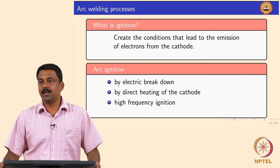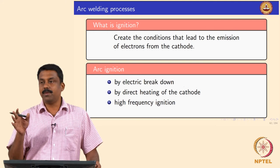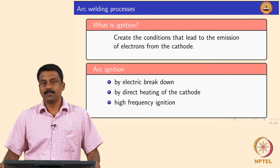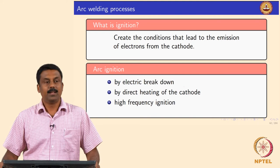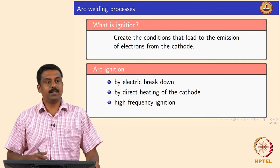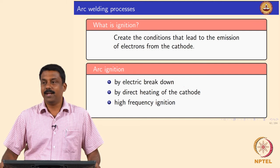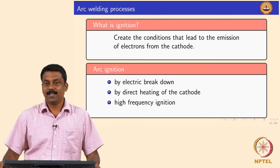This can be done by three ways. In all cases, ignition means we need to trigger electron emission from the cathode — either by electric breakdown, direct heating of the cathode for thermionic emission, or by high frequency ignition. For example, a lower-skilled mechanic would touch the electrode to the base material to ignite the arc.